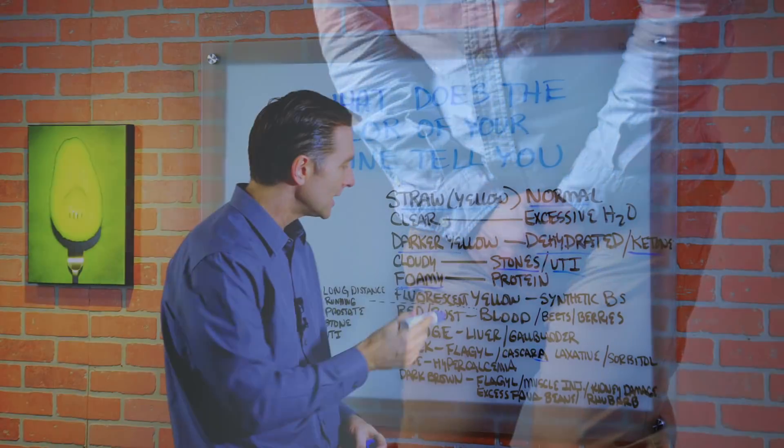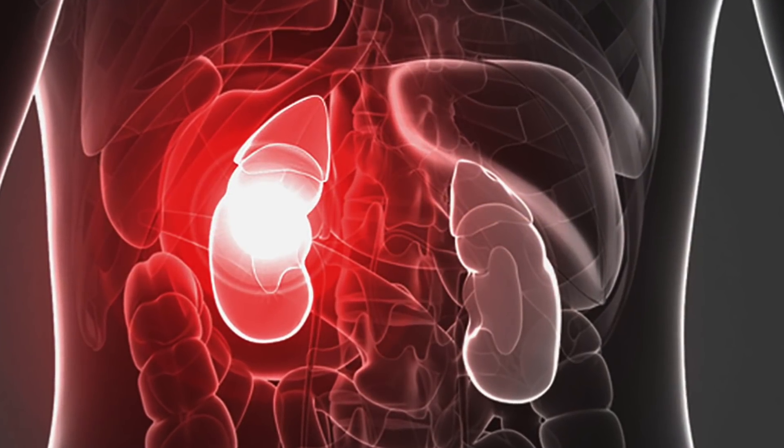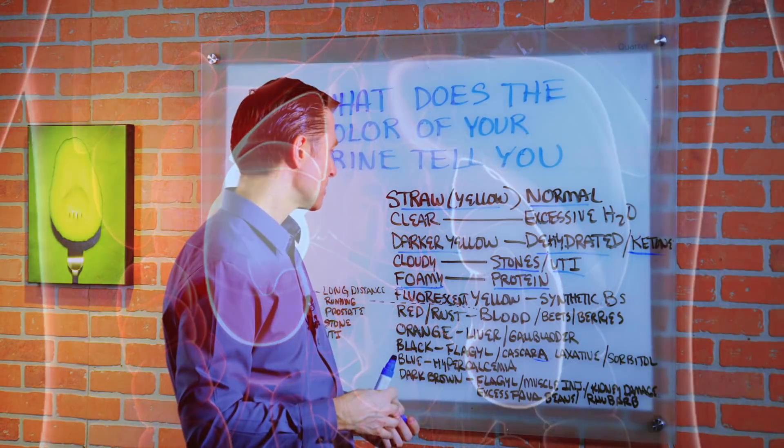If it's foamy, you could potentially have protein in the urine, which means that your kidneys are leaking protein. It's not filtering. There's some kidney damage going on.